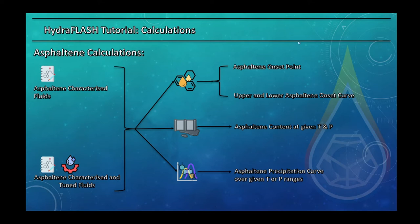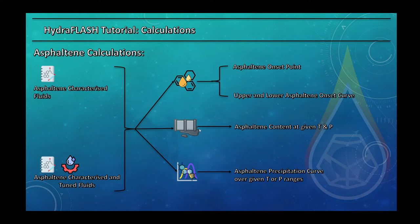In the PT diagram you can have two curves: the upper onset line and the lower onset line. At conditions where asphaltenes are stable, you can predict how much asphaltene will form in the system and what the composition of the asphaltene phase is. The asphaltene content module predicts content at a given temperature or pressure, and the precipitation curve calculates content over a range of temperatures and pressures.